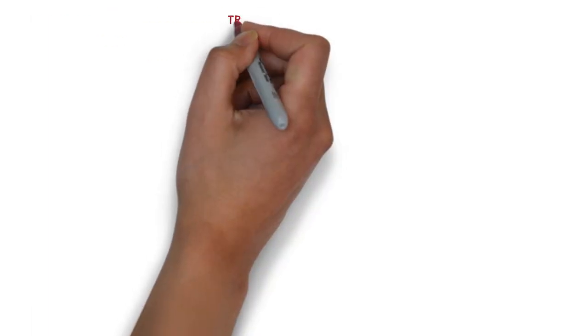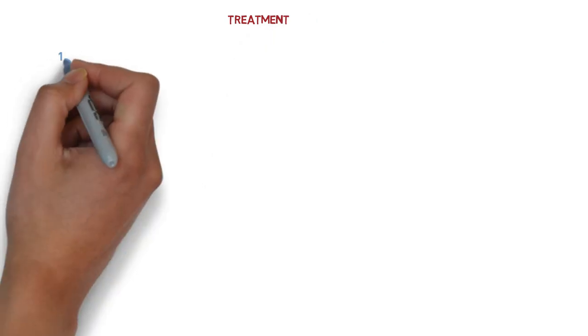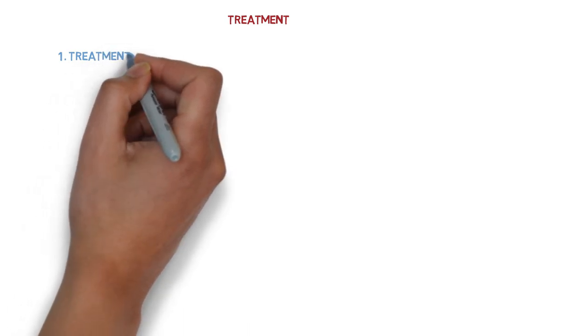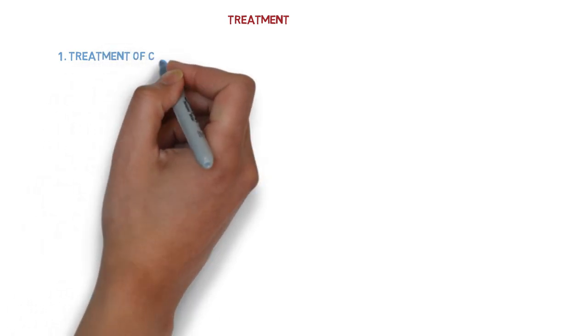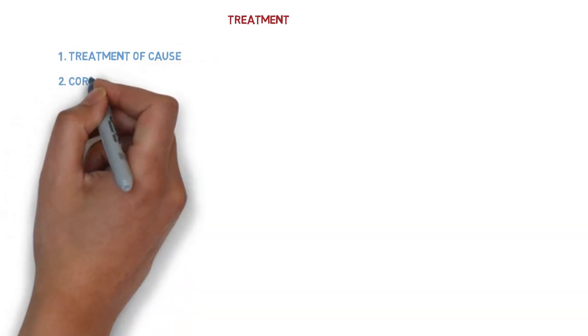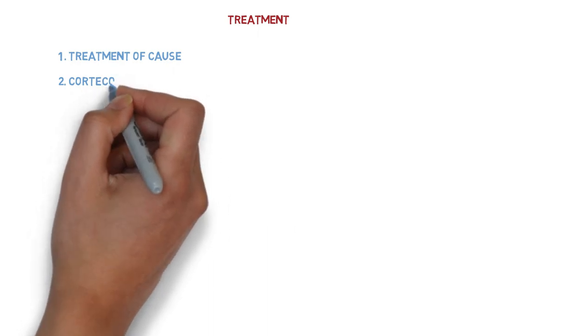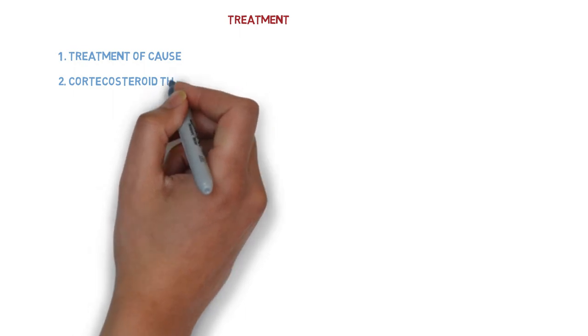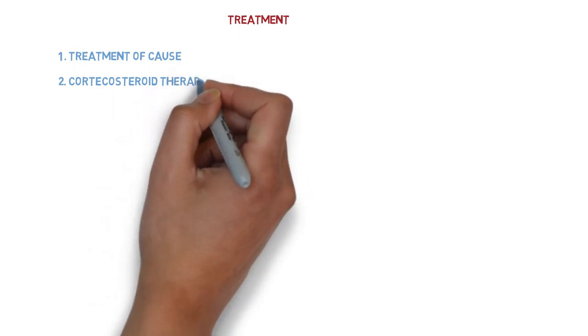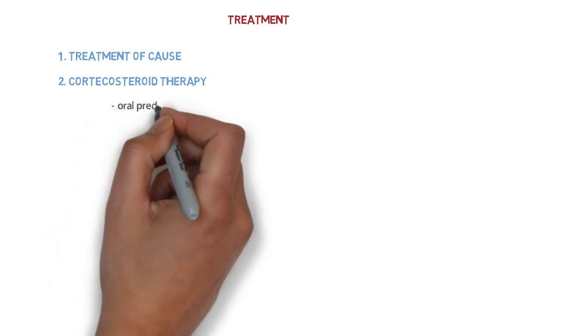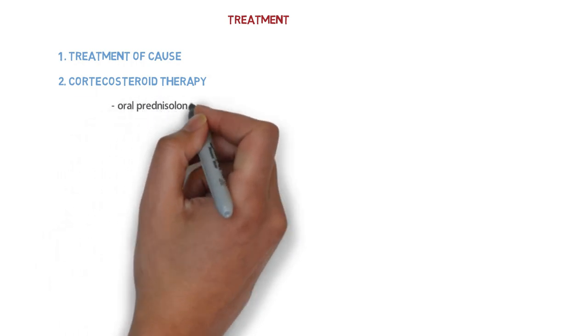The last part is treatment of optic neuritis. The first treatment is that we have to treat the cause behind formation of optic neuritis - effort should be made to find out and treat the underlying cause. There is no effective treatment for idiopathic and hereditary optic neuritis associated with demyelinating disorders. We can use corticosteroid therapy.